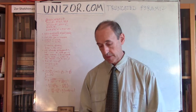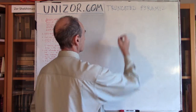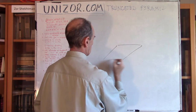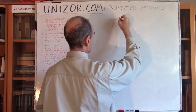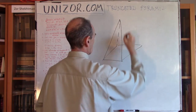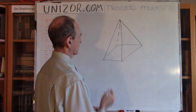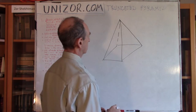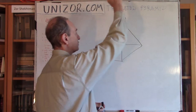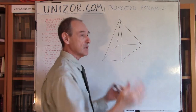So this is about the truncated pyramid, and first we have to explain what a truncated pyramid is. That's actually quite simple. You have, let's say, a pyramid — a quadrilateral pyramid with some kind of a quadrilateral at the base. Truncated means we just cut off the top of it, basically. That's it. And whatever is left is a truncated pyramid.